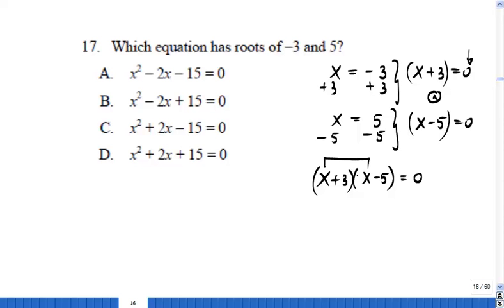FOIL. First, x times x is x squared. Outer, x times negative 5 is negative 5x. Inner, 3 times x is plus 3x. And the last terms, 3 times negative 5 is negative 15, equals 0.